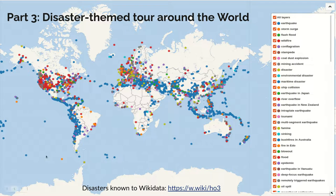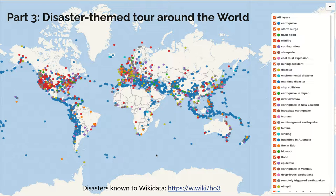Here is one example visualization of disaster-related data from Wikidata. It shows disasters known to Wikidata on a map by geolocation and also by disaster type — quite prominently visible are earthquakes. Depending on which disasters or regions you're interested in, you can explore this map by clicking on individual dots or filtering out particular disaster types. This works in a self-guided manner.